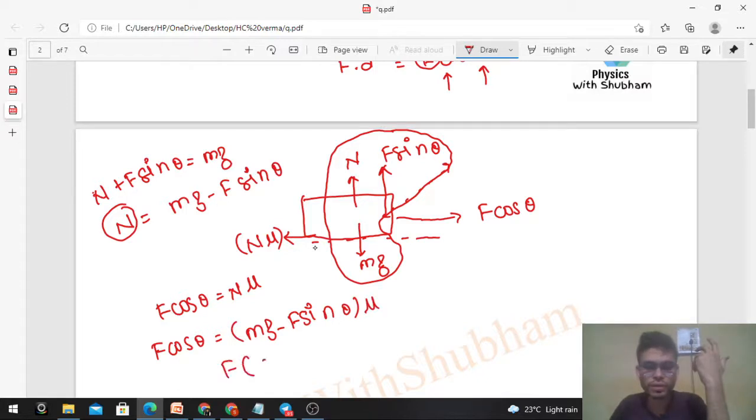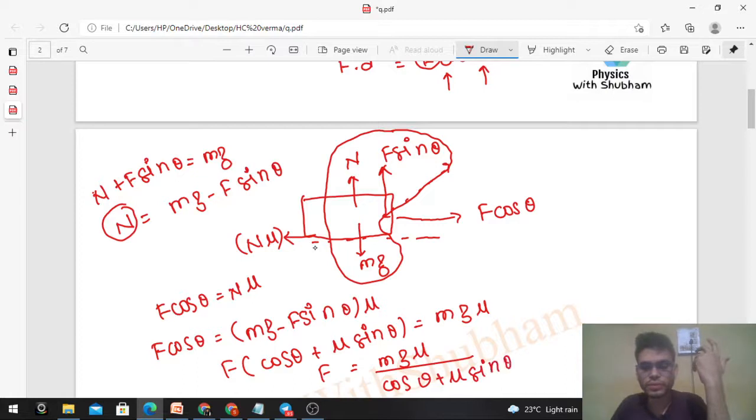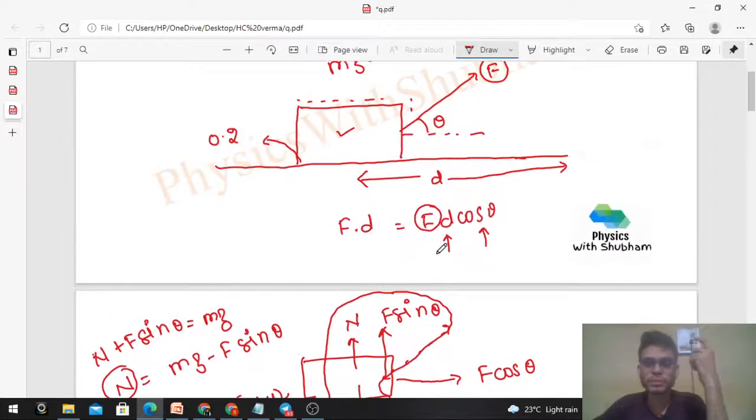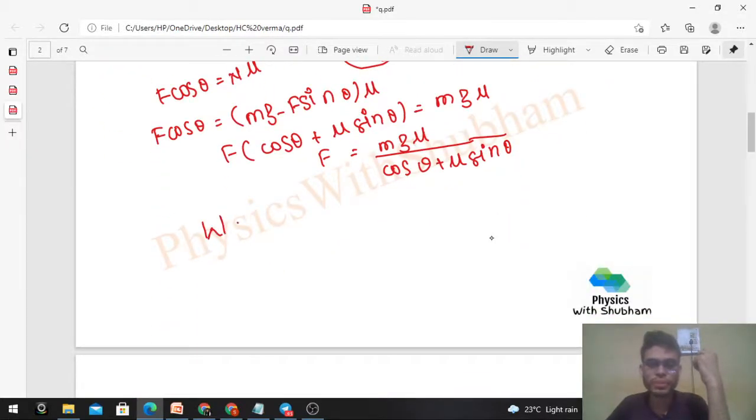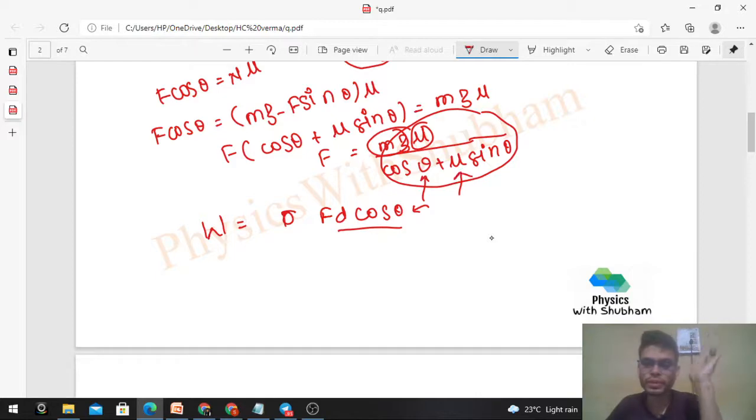From here, F cos θ plus μ sin θ equals mg μ. So F equals mg μ divided by cos θ plus μ sin θ. This is the value of F. You can substitute this value to find work. Work done will be F times d times cos θ. This will be your answer. Your answer will be in terms of θ. You know everything: mg is given, μ is given, and the answer comes out in terms of θ.